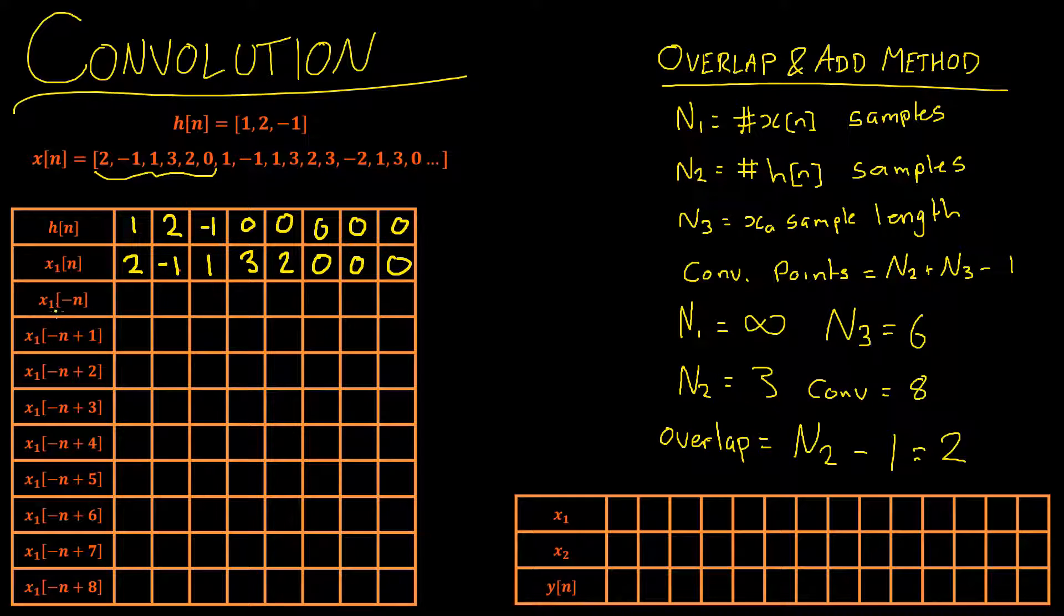However in this video we have negative n. So if you can imagine n plus 1 would shift it 1 to the left and then taking the negative of that would flip the whole signal. In other words you would have a shift 1 to the right. So hopefully that makes sense. Let's get started.